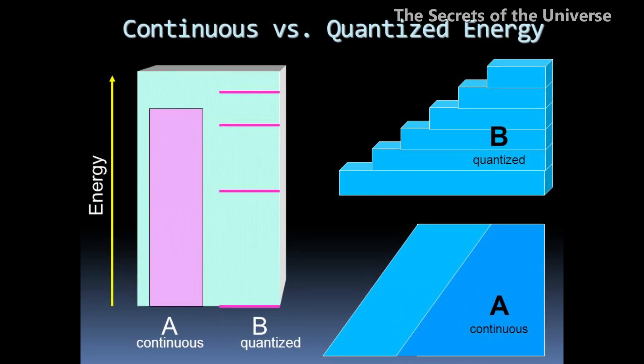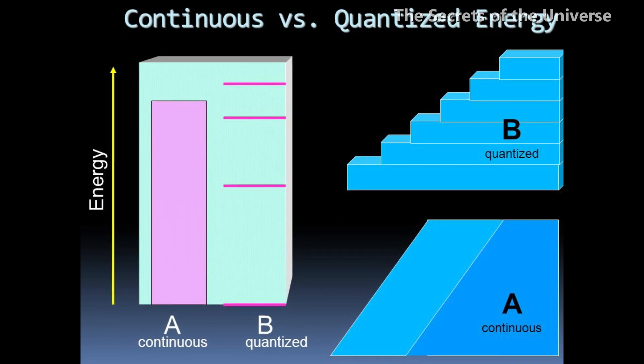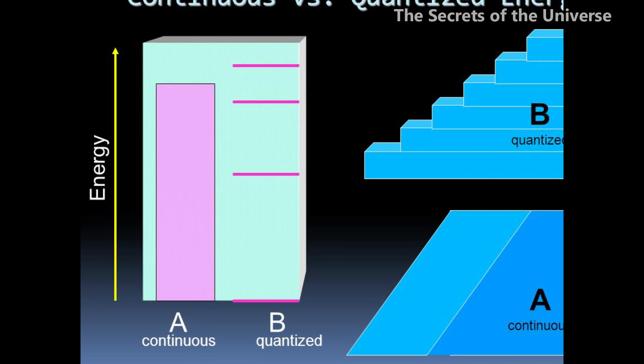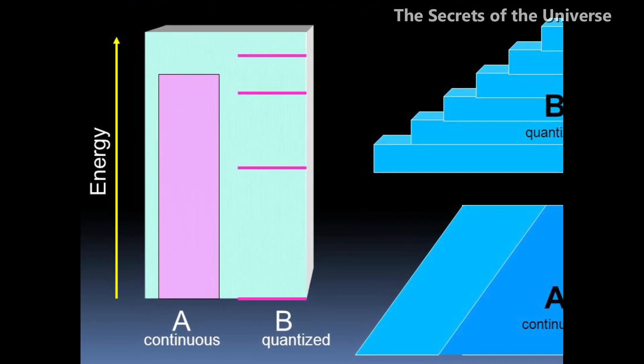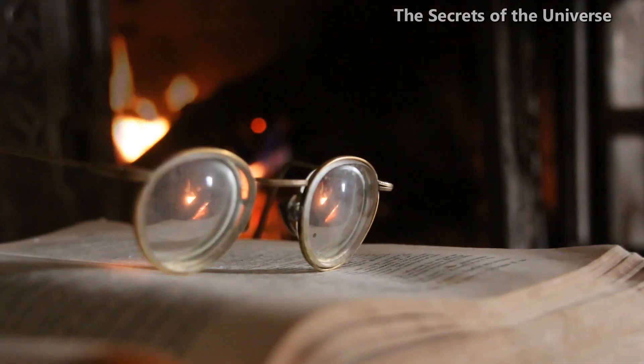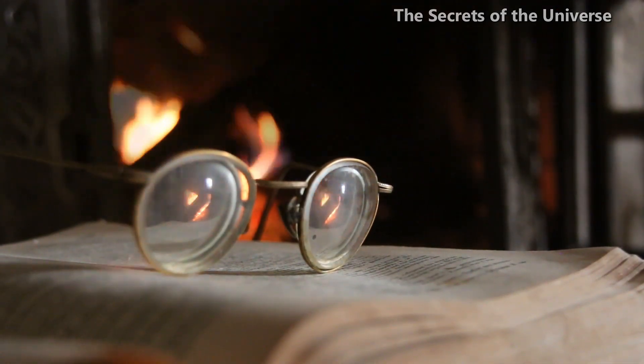Energy can only be in discrete units, 1, 2, 3 and so on. So, Planck replaced the concept of continuous energy with discrete packets. Planck regarded this hypothesis as the most difficult task in his life. But he didn't believe it to be true.